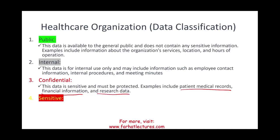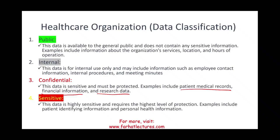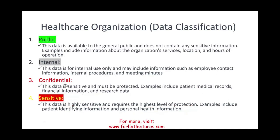Then we could have sensitive data. For the purpose of this example, sensitive is the highest level, which is highly sensitive and requires the highest level of protection. Examples include identifying information and personal health information for actual patients. There could even be a fifth category — highly sensitive — or, for very important organizations, secret and top secret classifications. Usually four classifications are commonly used, and these are what you need to know for an accounting information system course or the CPA, CMA, or CISA exam.